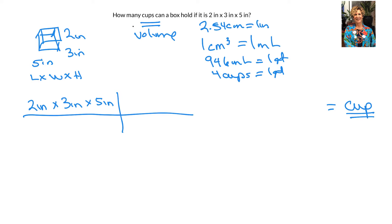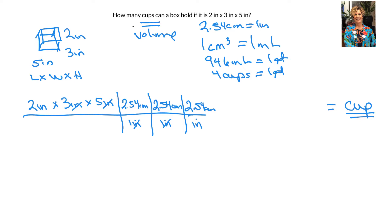I want to get rid of inches, so I'll say 2.54 centimeters is in an inch — that gets rid of the first inch. I repeat it: 2.54 centimeters per inch gets rid of the second inch. Then 2.54 centimeters per inch gets rid of this third inch. Because these are cubic units, I have to do this three times. Now I have centimeters times centimeters times centimeters — that's centimeters cubed.